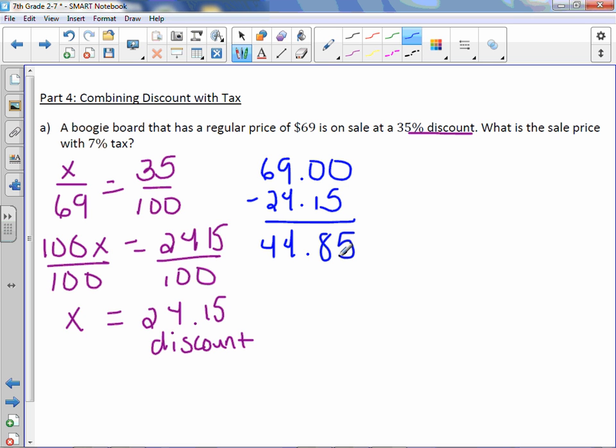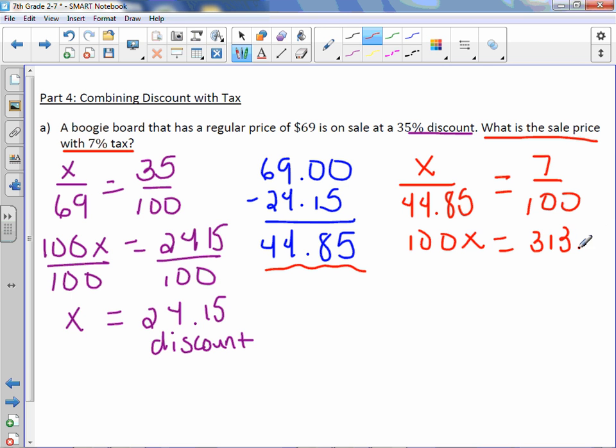Now we need to do the second part. Now we want to know what is the sale price with 7% tax. We are going to use this number that we found right here, $44.85, in our new proportion. So our sale price is $44.85, and this time our percent of tax is 7. Cross multiply. Divide by 100 on both sides.